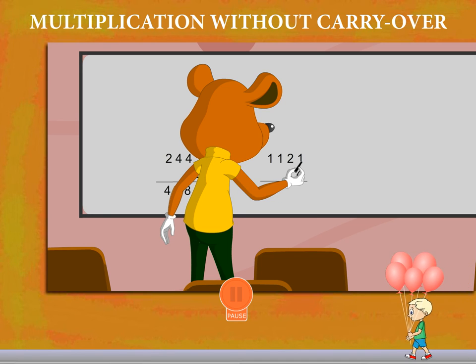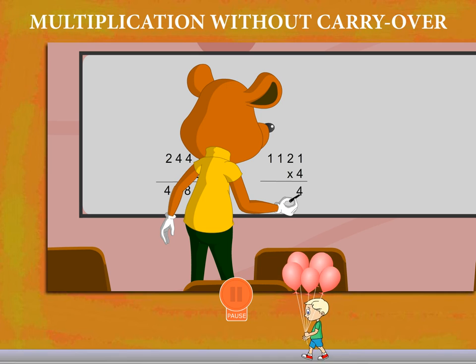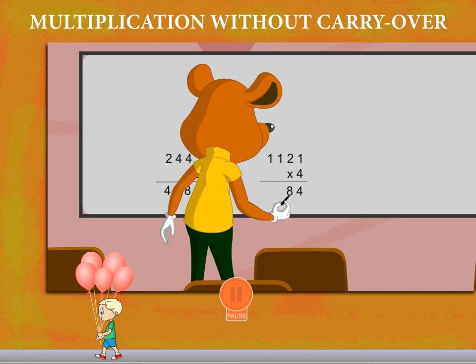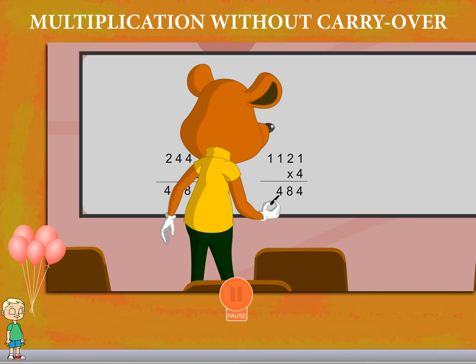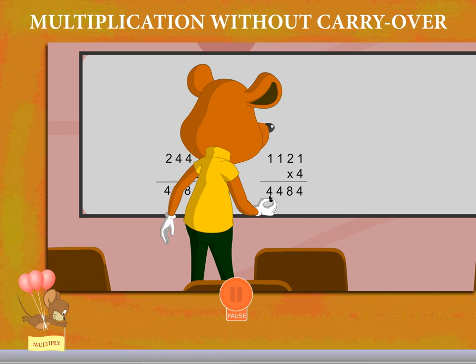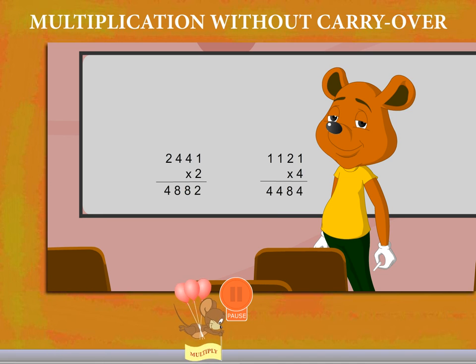He multiplies 4 into 1 to get 4, then multiplies 4 by 2 to get 8. Now he multiplies 4 into 1 to get 4, and 4 into 1 again to get 4 once more. He writes the answer as 4,484.